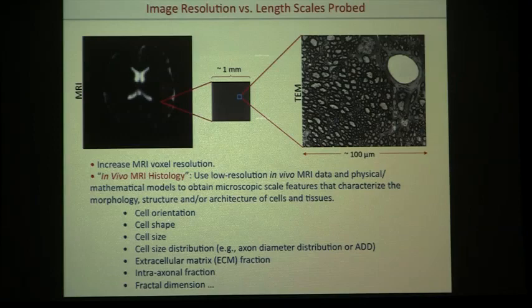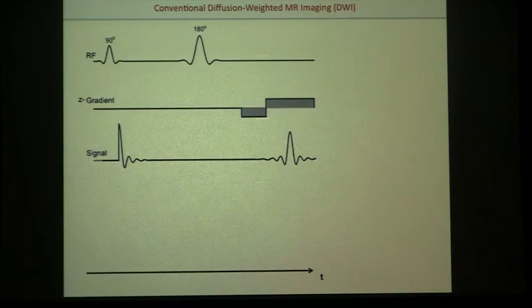The candidate quantities we're trying to estimate include cell size, cell size distribution, and extracellular matrix fraction — the kinds of things a neuropathologist might look at when making a determination or grading and staging cancers.